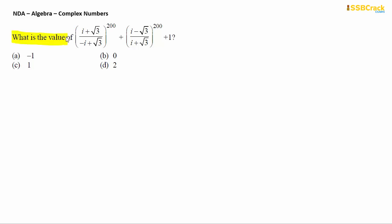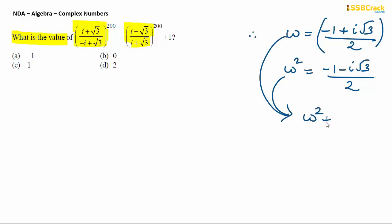Next question. Let's look into this question. Now we've been asked to calculate the value of the expression which involves 200 power of a complex number, 200 power of another complex number, and plus 1. I will suggest that simple complex cube roots of unity concepts will be used. You just have to keep in mind the important complex cube roots of unity values. You should know that omega is defined as minus 1 plus i root 3 by 2, and omega square, if you take the square of omega, you get minus 1 minus i root 3 by 2, which we call complex cube roots of unity, which are the roots of omega square plus omega plus 1 equals to 0.